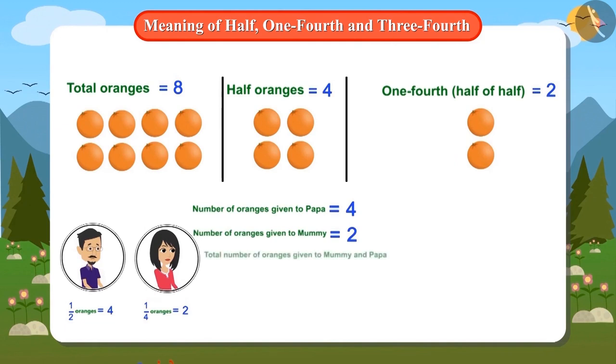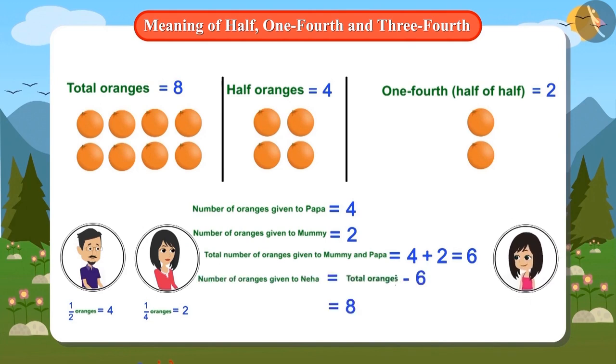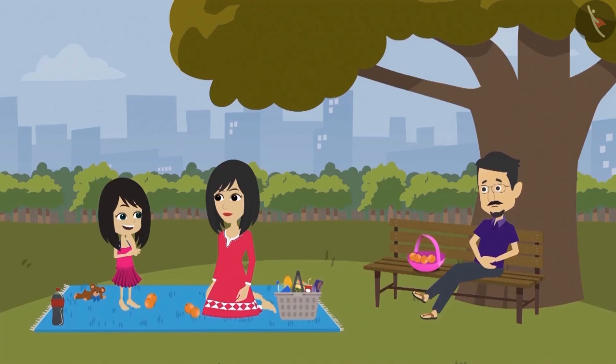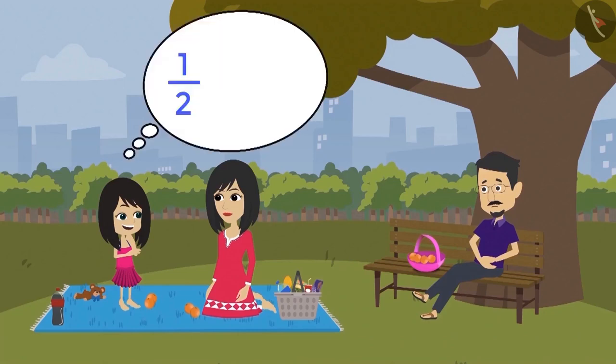Now let's add these two. The answer is six oranges. This means that six oranges will be given to Neha's mummy and papa. Then how many oranges will Neha get? You are absolutely right. Neha will get two oranges. Neha figured out how many oranges would come after adding half oranges and quarter oranges.